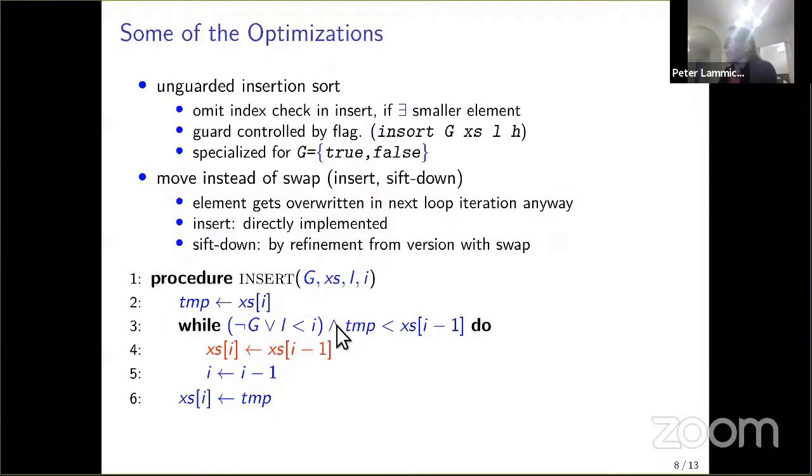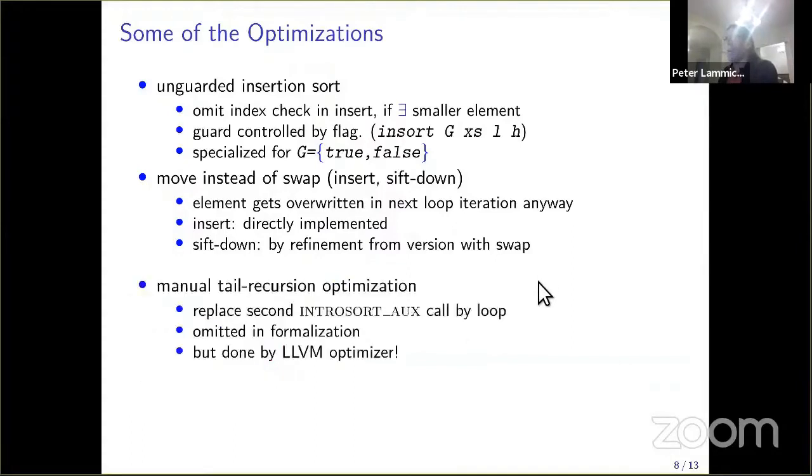For the insert procedure, we implemented it directly. However, the same applies for the sift down procedure of heap sort, which is more complicated. Here it makes sense to first do a version with a swap, then do a refinement step to a move. This split these two aspects of the algorithm, proving them separately, which made the proof smaller.